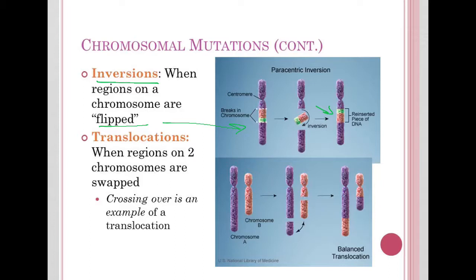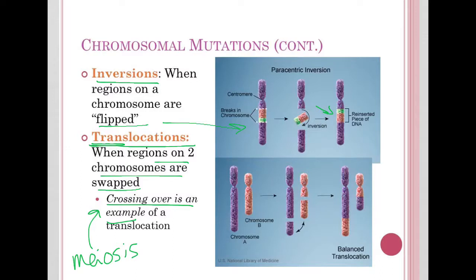Another change in location is a translocation, where 'trans' means across. Translocations occur where two chromosomes swap regions. Crossing over in meiosis will be an example of a translocation. Two totally different chromosomes end up switching parts. And as mentioned, location does matter, so those could have a huge effect.